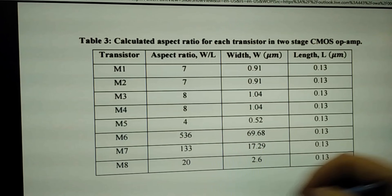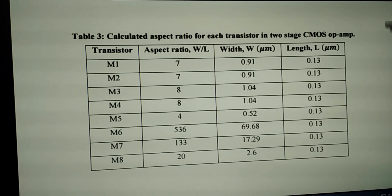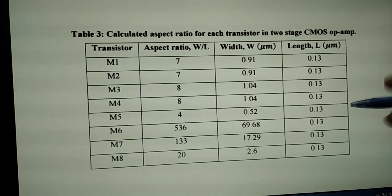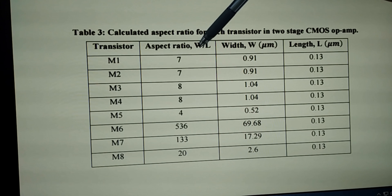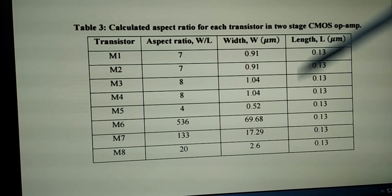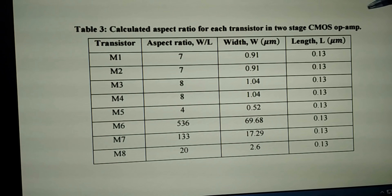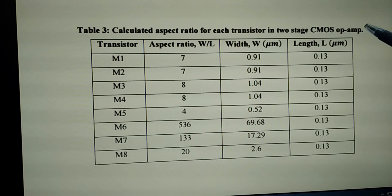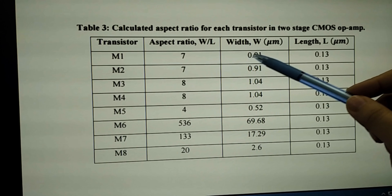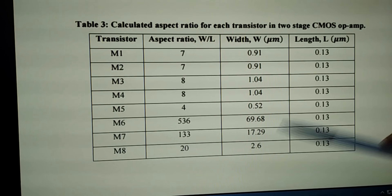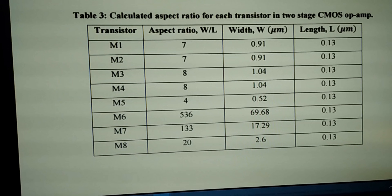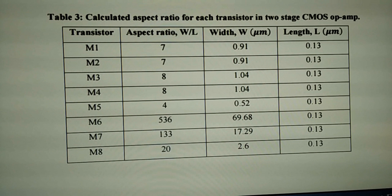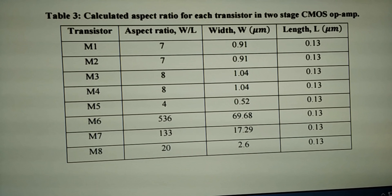This is the summary table of the aspect ratio of each transistor. The aspect ratios are as calculated, and the length is fixed because we are using 0.13 micrometer technology. From the calculation, we obtain the width of each transistor, and we use these aspect ratios to design the schematic using the computer tool.